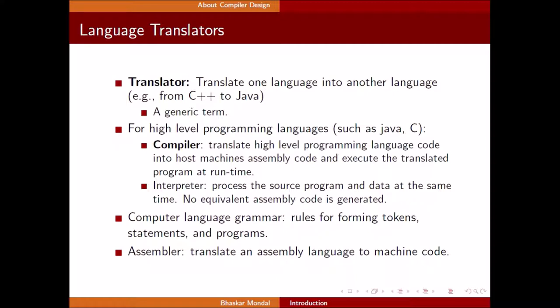Translator - this is a very generic term. Translate one language into another language is called translator. For high-level programming languages such as Java and C, that translator is known as compiler. So what compiler does: translate high-level language code into host machine assembly code and execute the translated program at runtime. This is not a generic definition of compiler. This is a function of compiler.